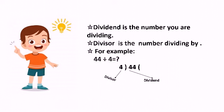So 44 is the dividend and 4 is the divisor. Now you can easily understand what is divisor and what is dividend.